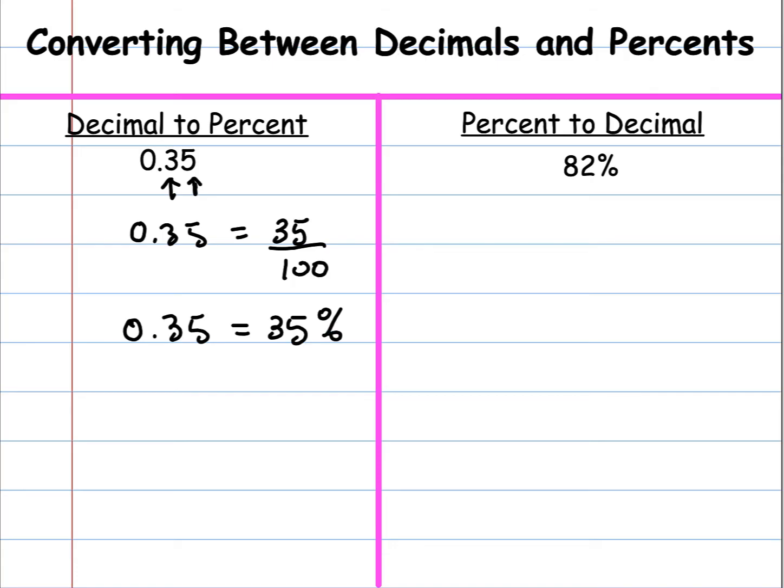Now look at what happened to the decimal point. So in this number, it's between the zero and the three. But where's the decimal point in the percentage? On the percentage, it's between the five and the percent value. So the decimal point moved to the right two digits.